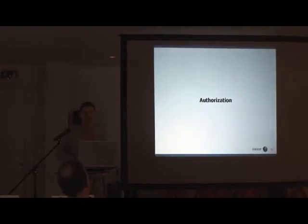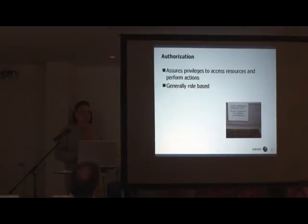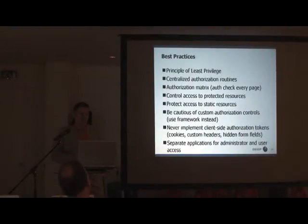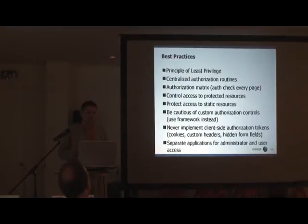Authorization is the next step. After they've authenticated and you know who they are, you need to know what they can do on your system. You use this to protect resources they shouldn't have access to. The principle of least privilege means giving users just enough privilege to do everything they need to do, and nothing more. If their account is compromised and they have access to the PO system but don't normally use it, it doesn't make sense to allow an attacker access to the PO system either.